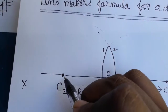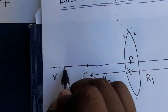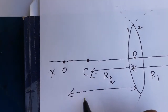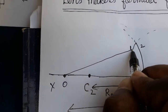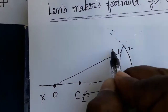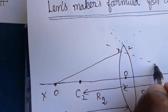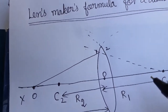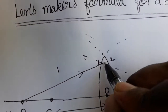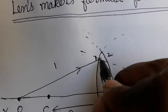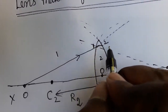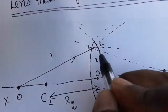Now I place the object here. The object distance is taken as u. The object light falls on the first surface, so I draw a normal from the center of curvature. The light is traveling from medium 1 to medium 2 and gets deviated from its path.